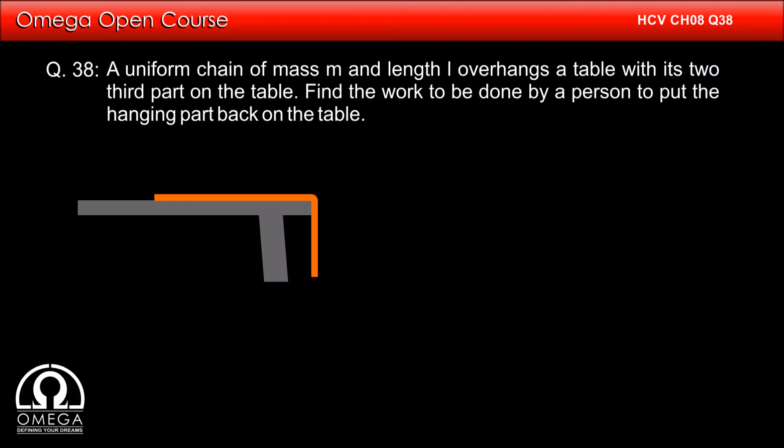A uniform chain of mass m and length L overhangs a table with its two-third part on the table. Find the work done by a person to put the hanging part back on the table.